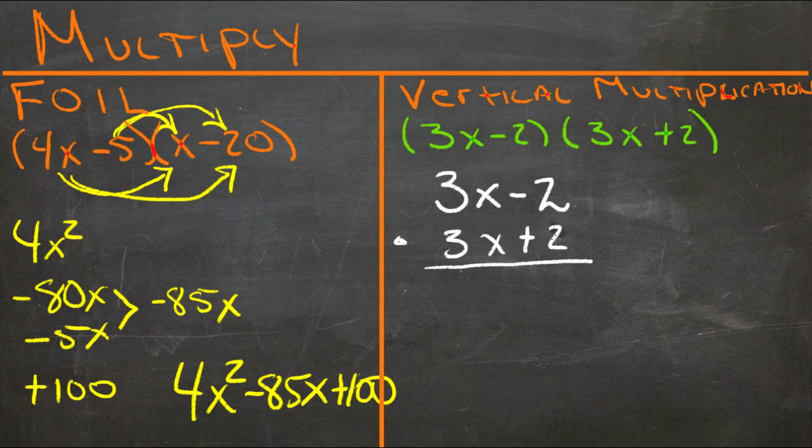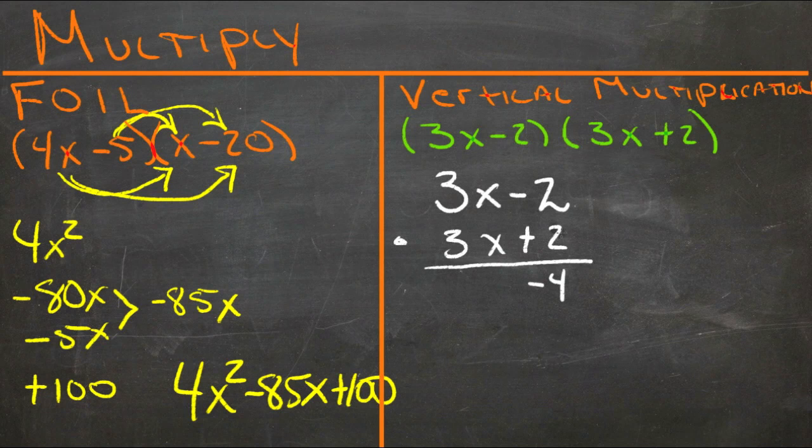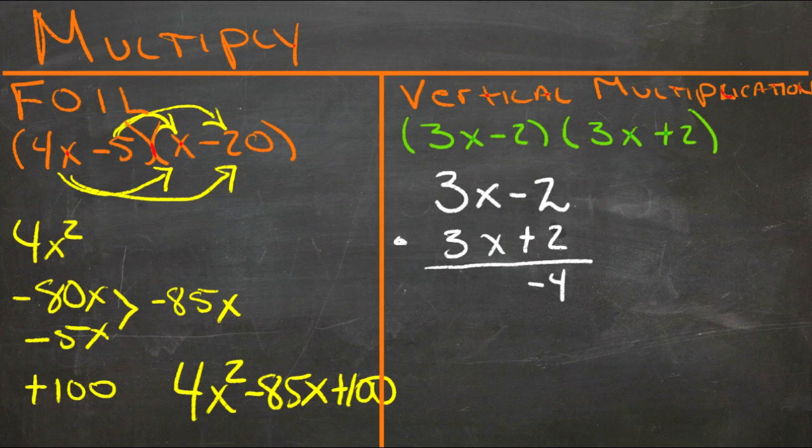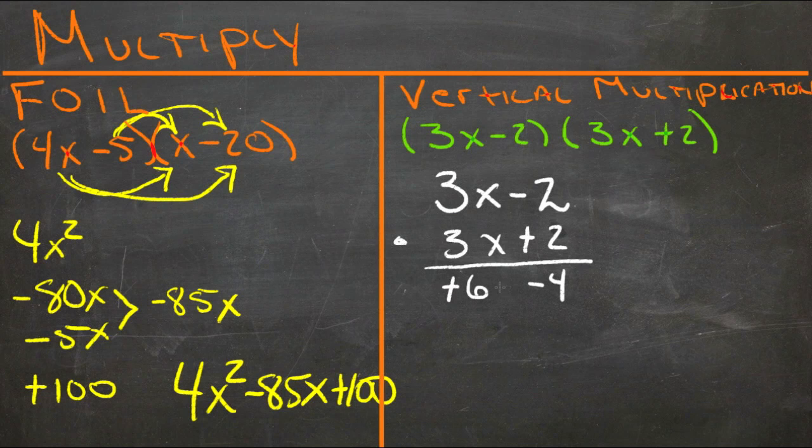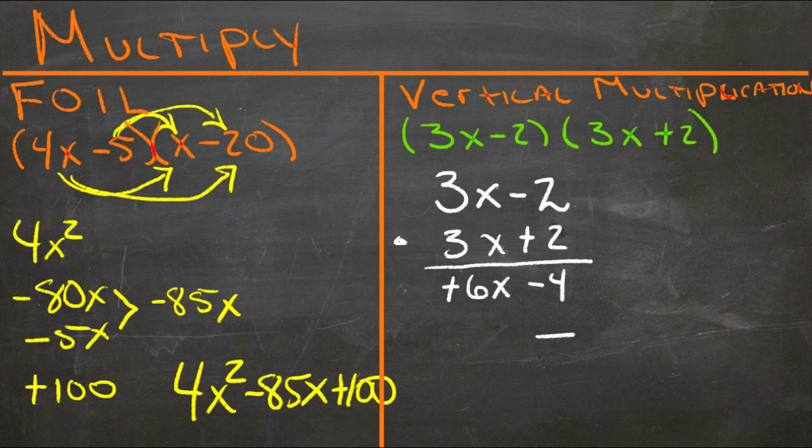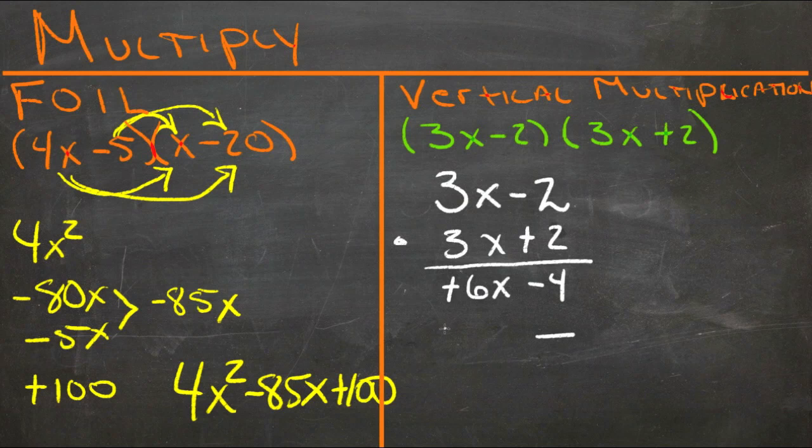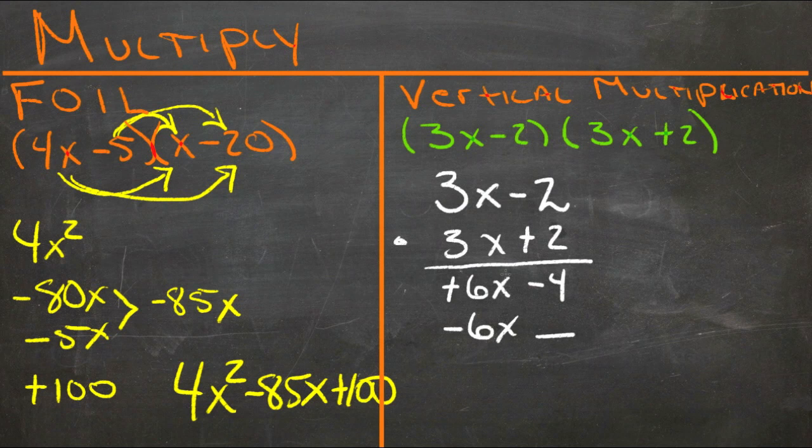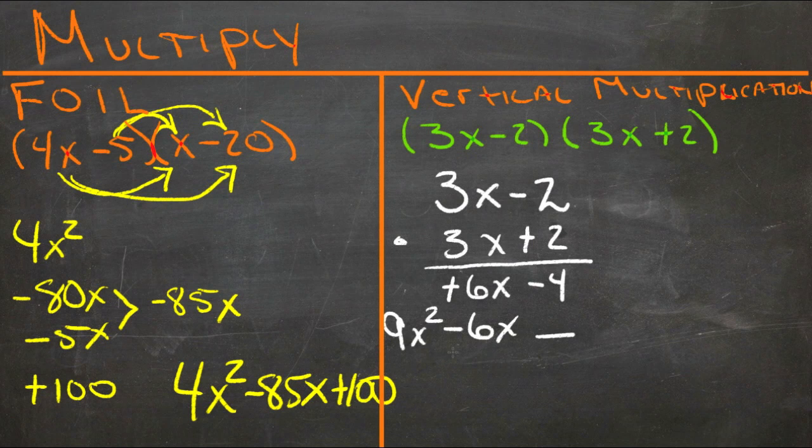We take the first term times the first term. 2 times negative 2. That's negative 4. And then the first term times the left-hand one. 2 times 3x is positive 6x. And then we move down and we skip a space. And then we do 3x times negative 2. That's negative 6x. And 3x times 3x. That's 9x squared.